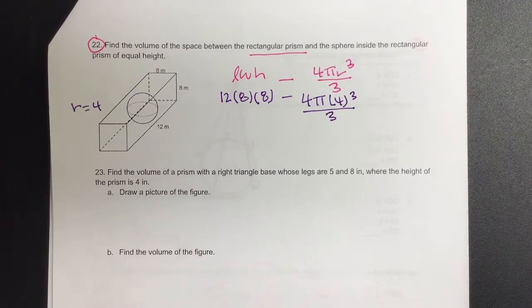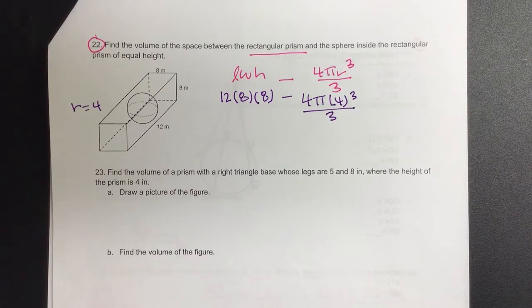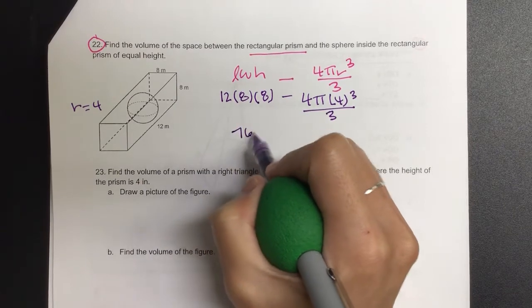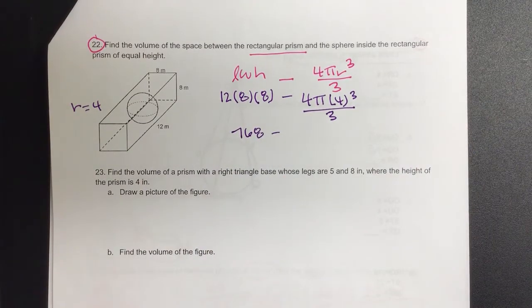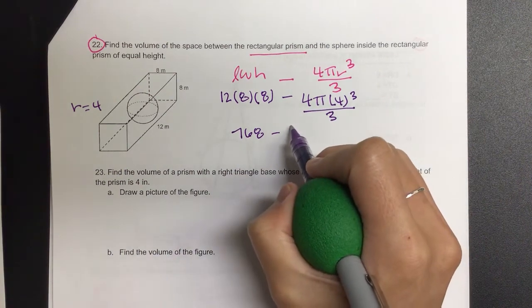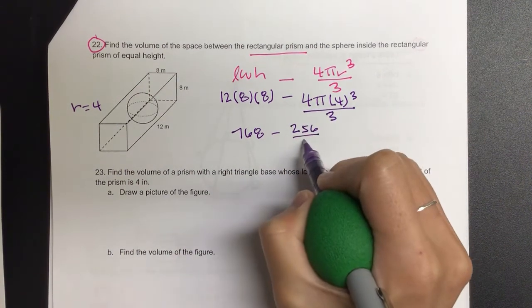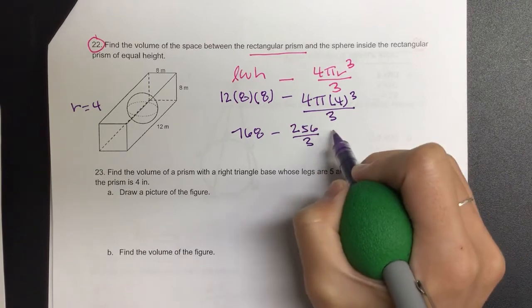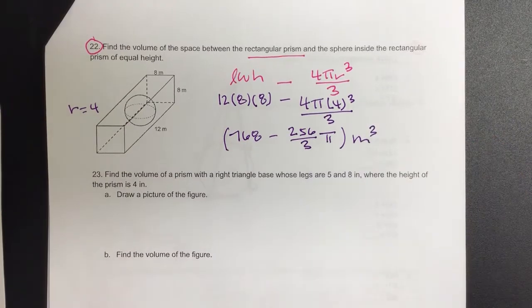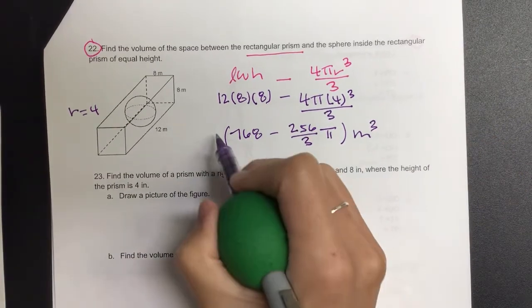Let's go ahead and find the first piece. 768 on the first part. And then I will do 4 to the power of 4 divided by 3. 256 over 3, and I want to leave it in terms of π. So that will be meters cubed.